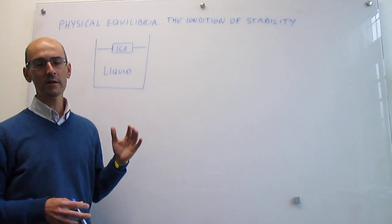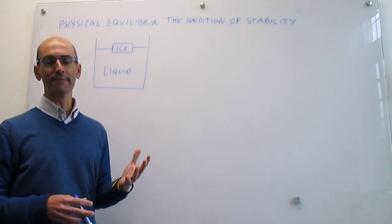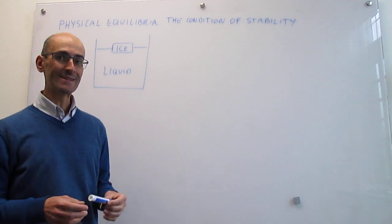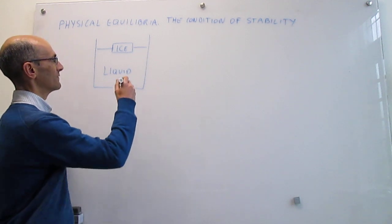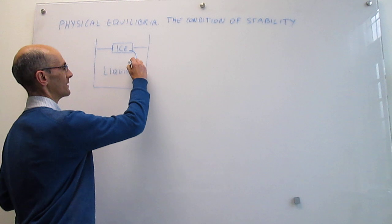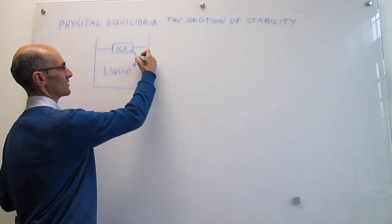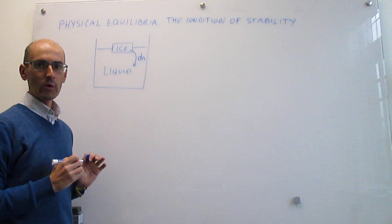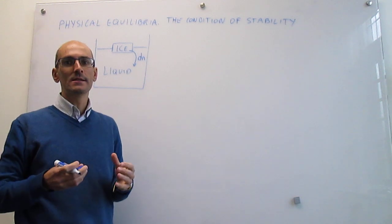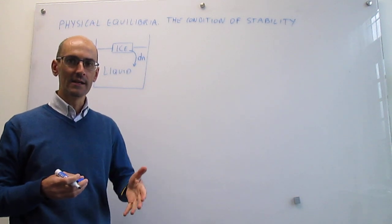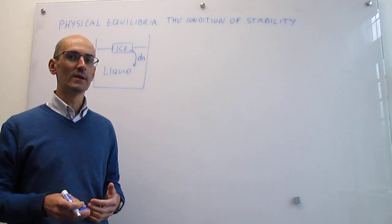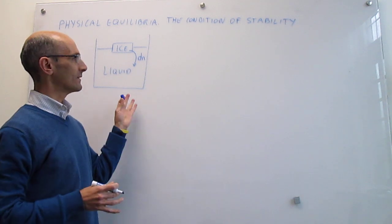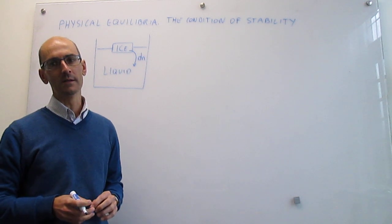So we have here water, and you have a little bit of ice floating on the liquid. We're going to assume that there's a tiny little amount of the ice turning into the liquid, and this amount is just going to be infinitesimal — so differential of n. And the question we're going to be asking is, is that change of the ice into the liquid, that fusion, spontaneous at those conditions of pressure and temperature that we're working in this experiment?